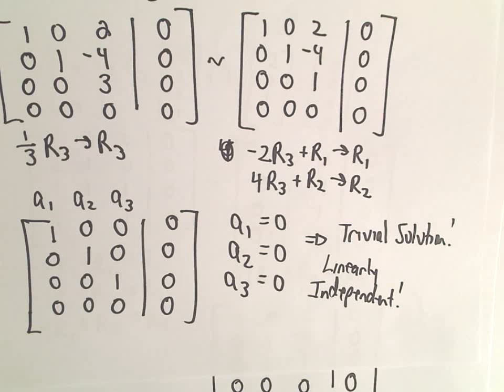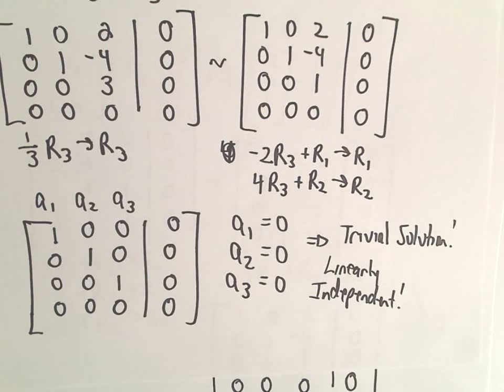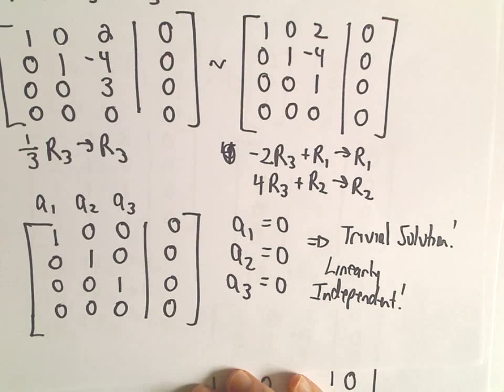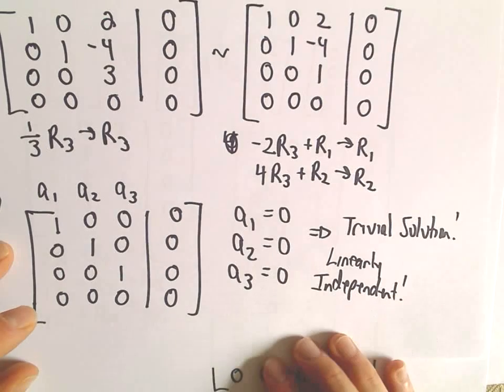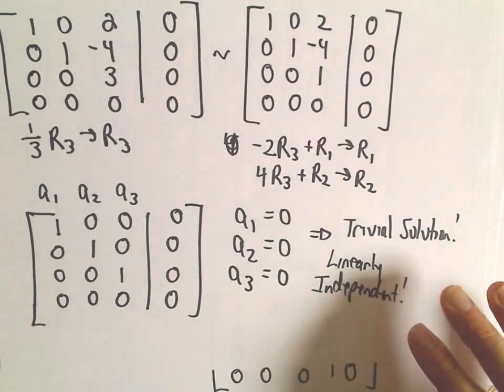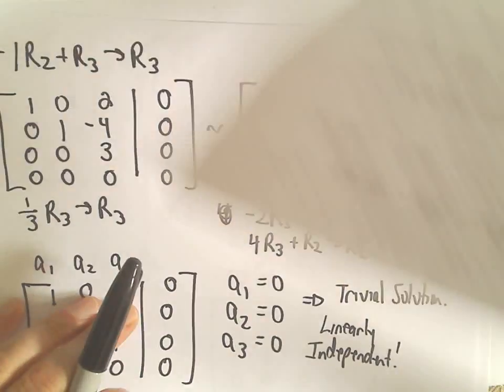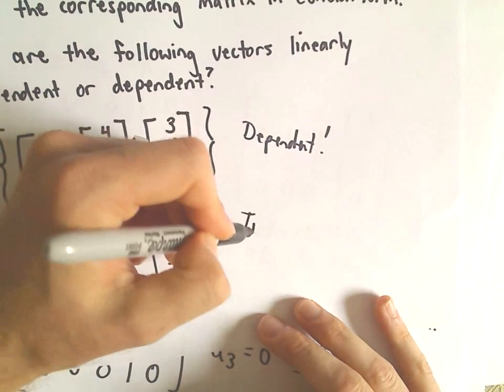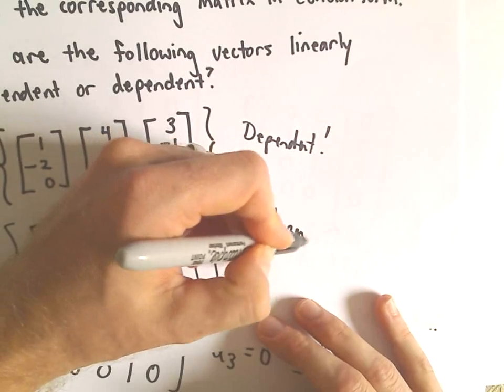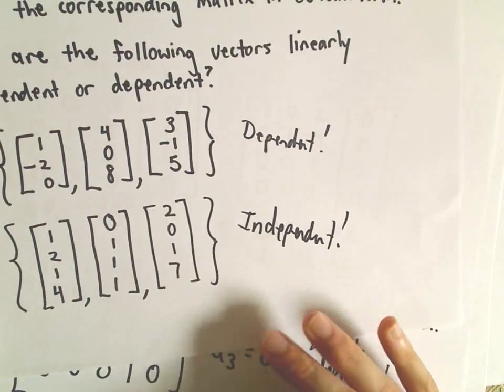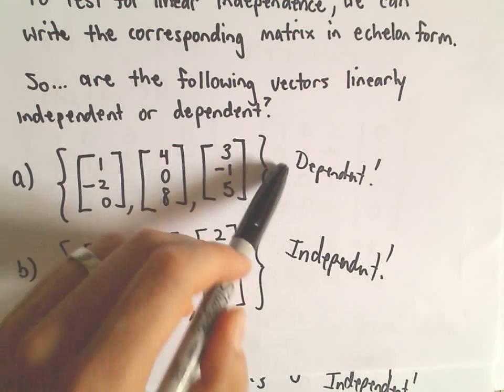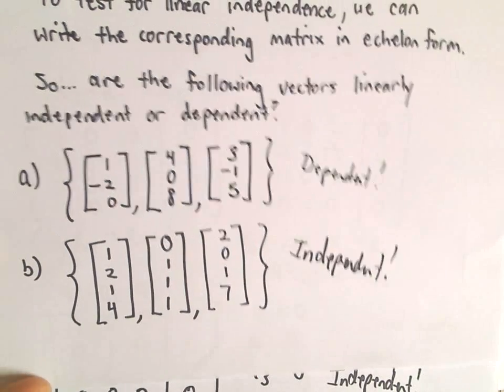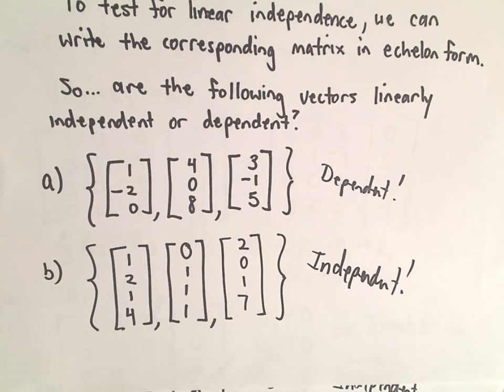that tells us that we have a linearly independent set of vectors. This is why you want to make sure, there are definitely some observations and shortcuts you can make. But for now, let's just brute force check them all, do the complete row reduction, and make sure whether or not we have trivial solutions. So one example of a linearly dependent set we saw in Part A, and in this one, it's going to be linearly independent. We'll tie these notions together of span and linear dependence to form the important notion of what's called a basis for a set of vectors.